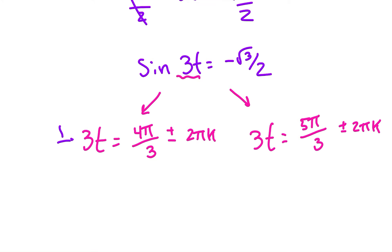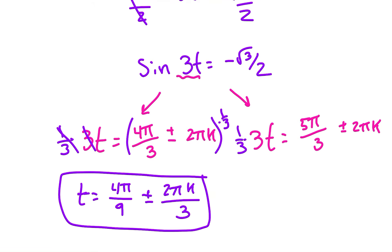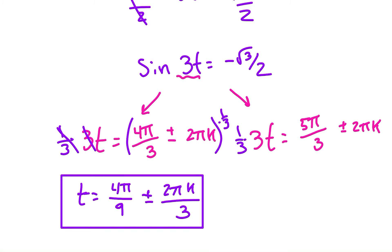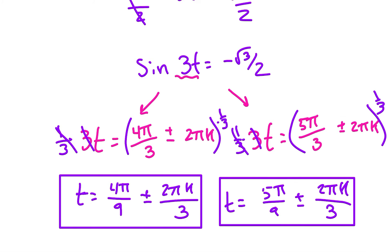The only additional step is that we have to multiply by 1/3 to cancel out that 3. Multiply by 1/3 on the left — that cancels — and we multiply by 1/3 on the right as well. So we end up with t equals 4π/9 plus or minus 2πk/3. Same idea over here: multiplying by 1/3, so 1/3 times 5π/3 is 5π/9, plus or minus 2πk/3.